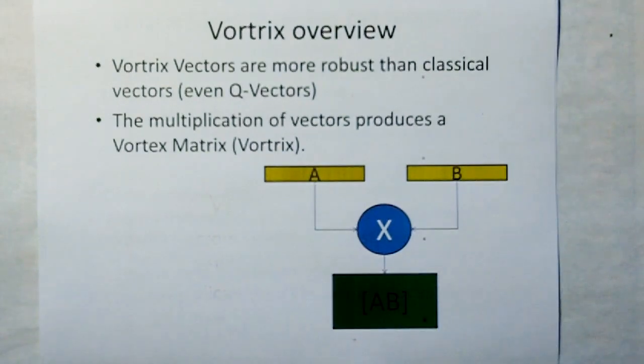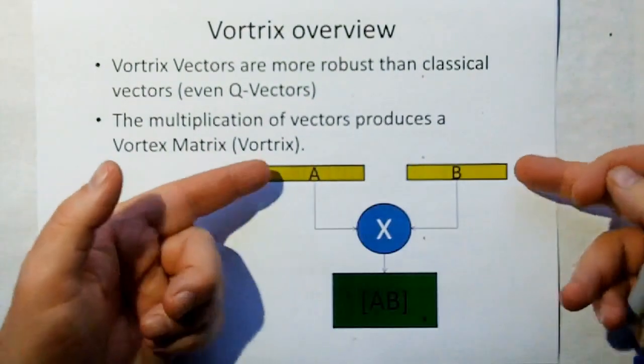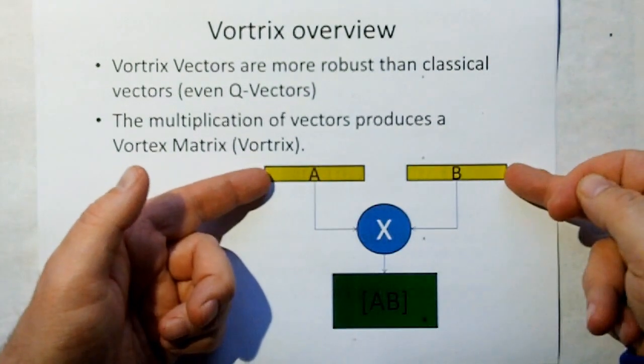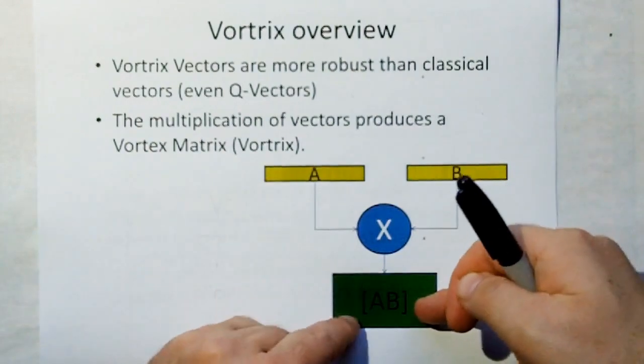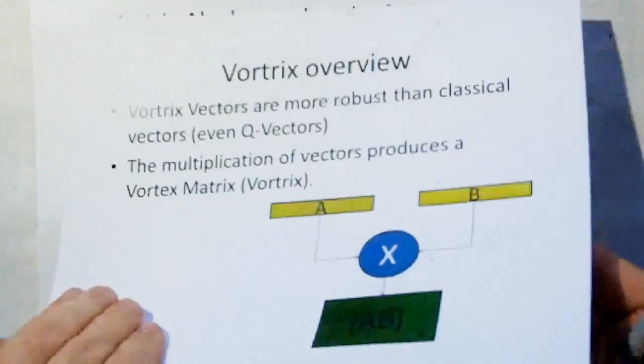Let me give you a simple Vortrix overview. Vortrix vectors are more robust than classical vectors, even Q-vectors. The multiplication of Vortrix vectors produces a vortex matrix, and that's where the word Vortrix comes from. It's a contraction of vortex matrix. This shows you two Vortrix vectors being multiplied to give you what I call the A-B matrix.